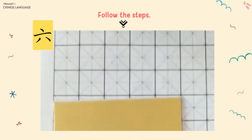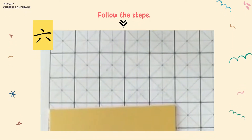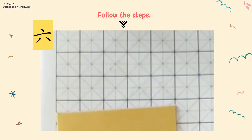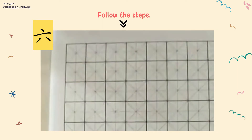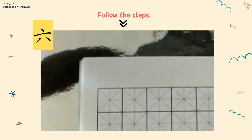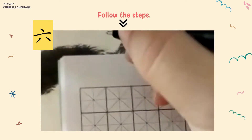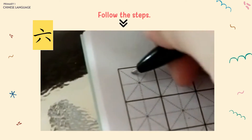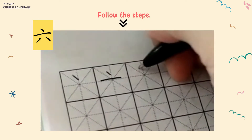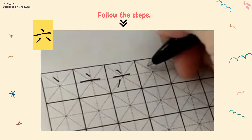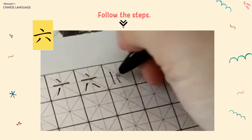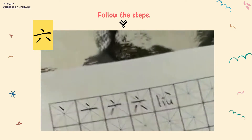Okay friends, now let's try to write Leo. The character of Leo — prepare your book and we will start to write in here. Okay, so this is the first stroke. Leo.